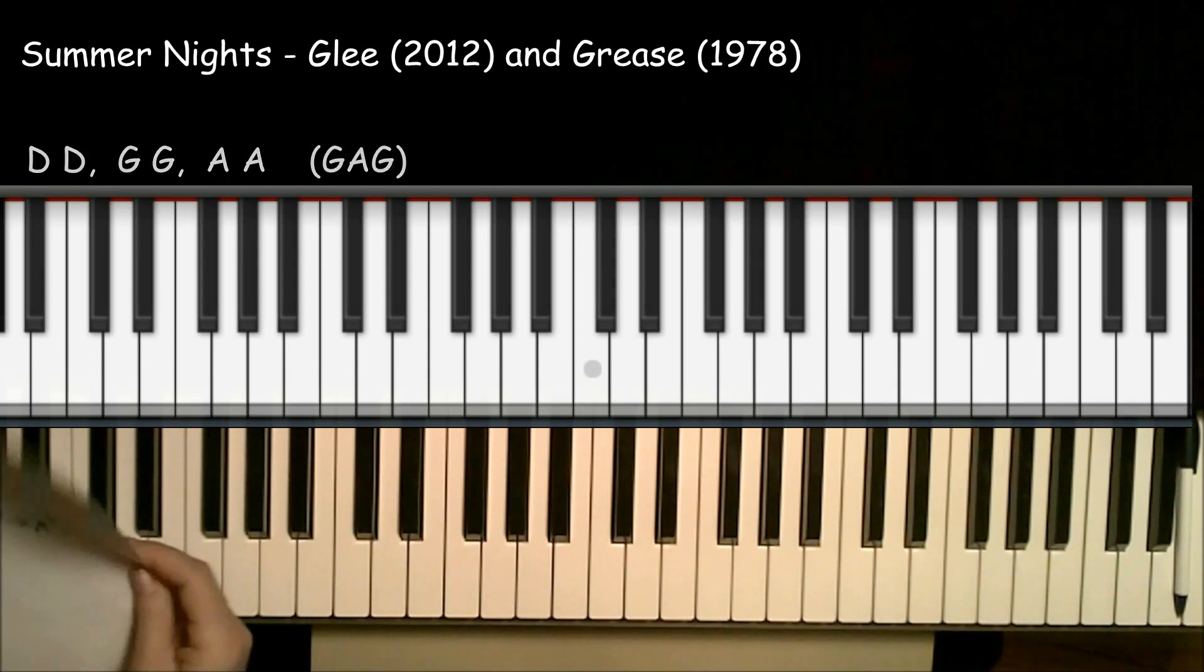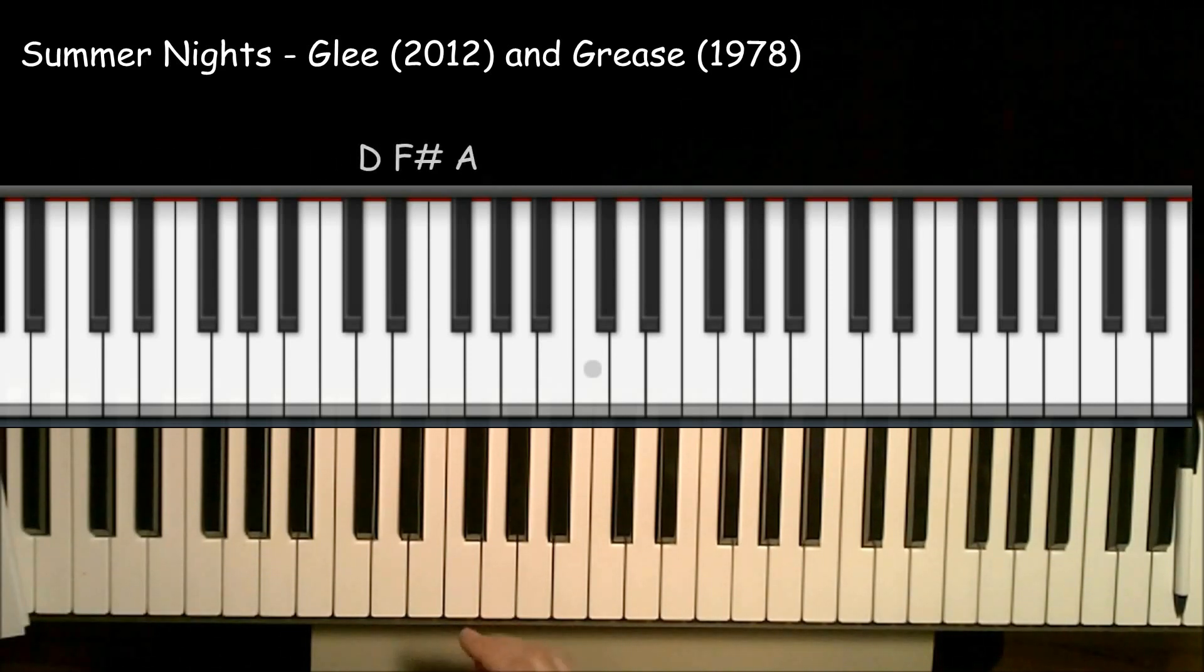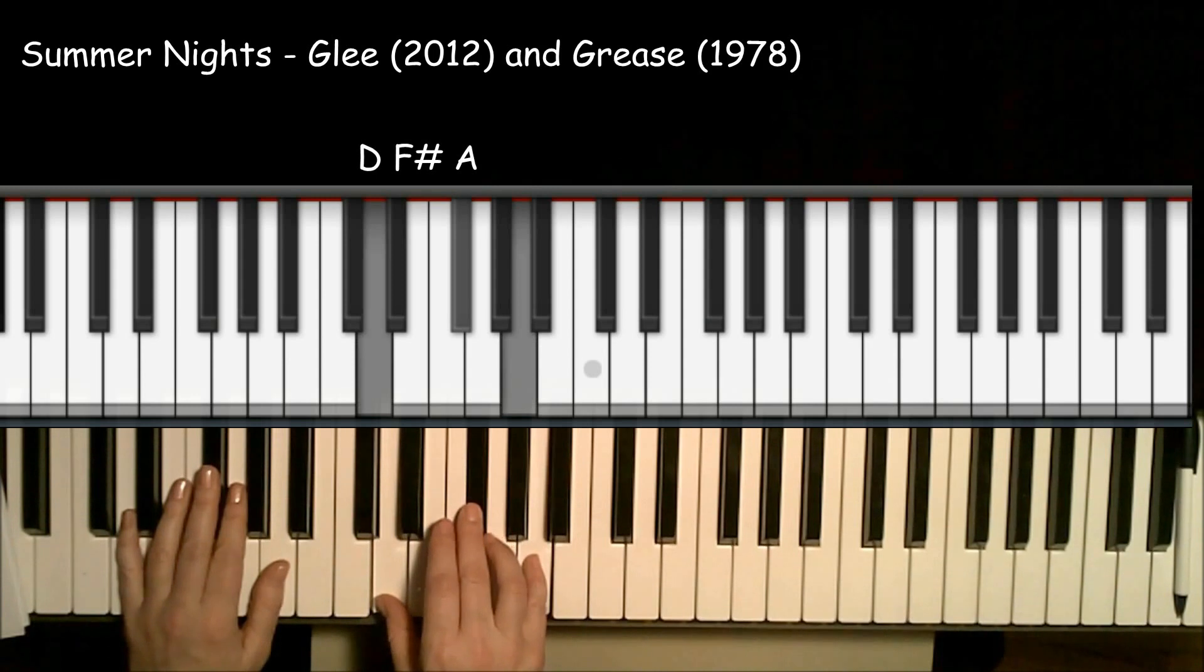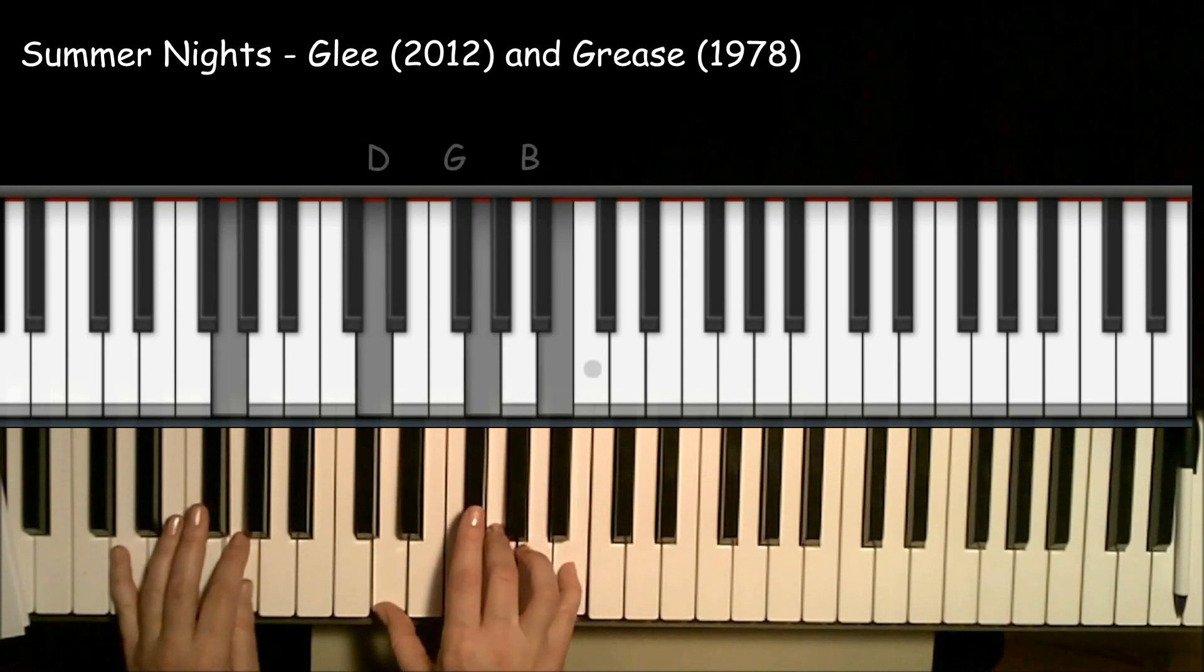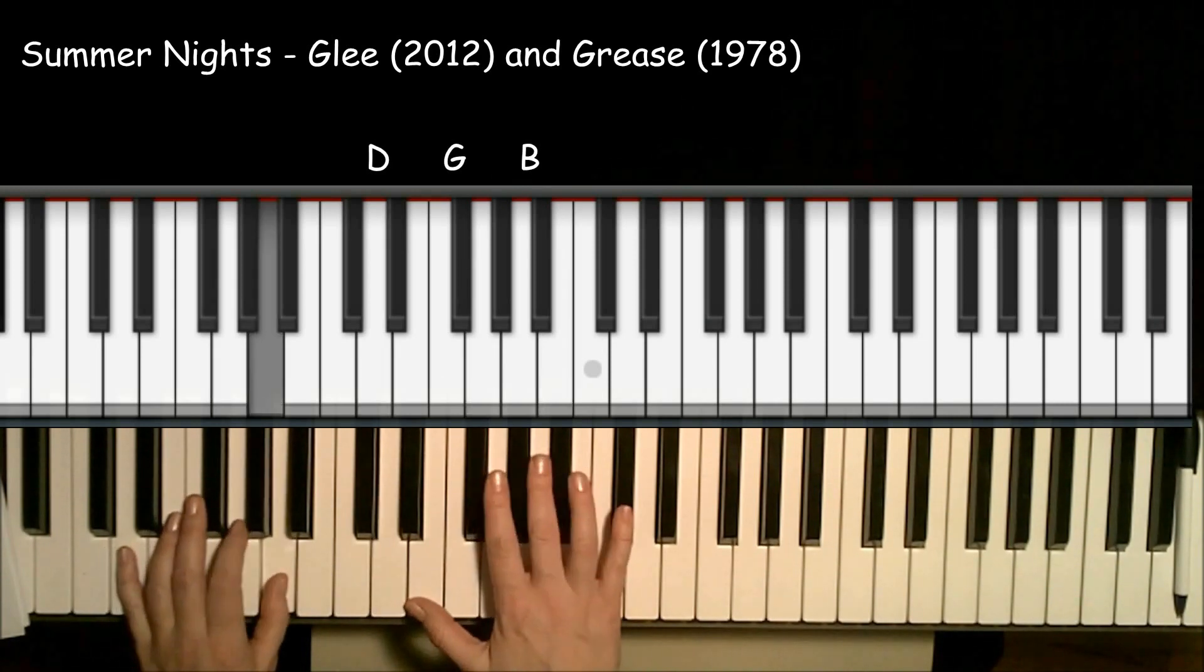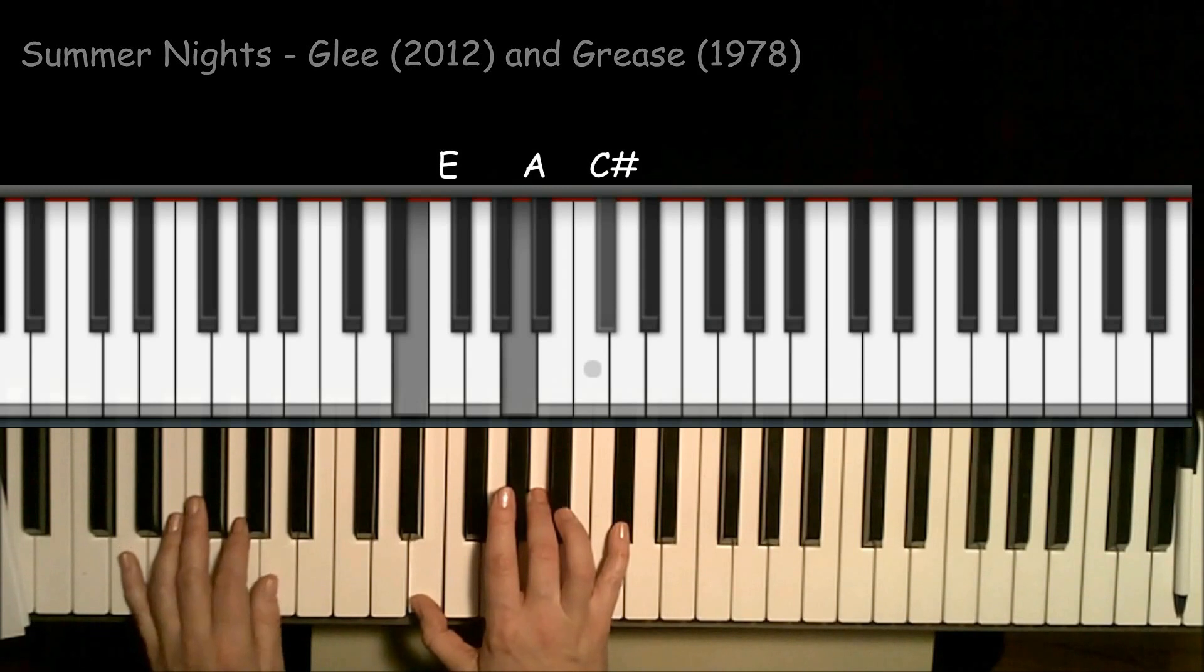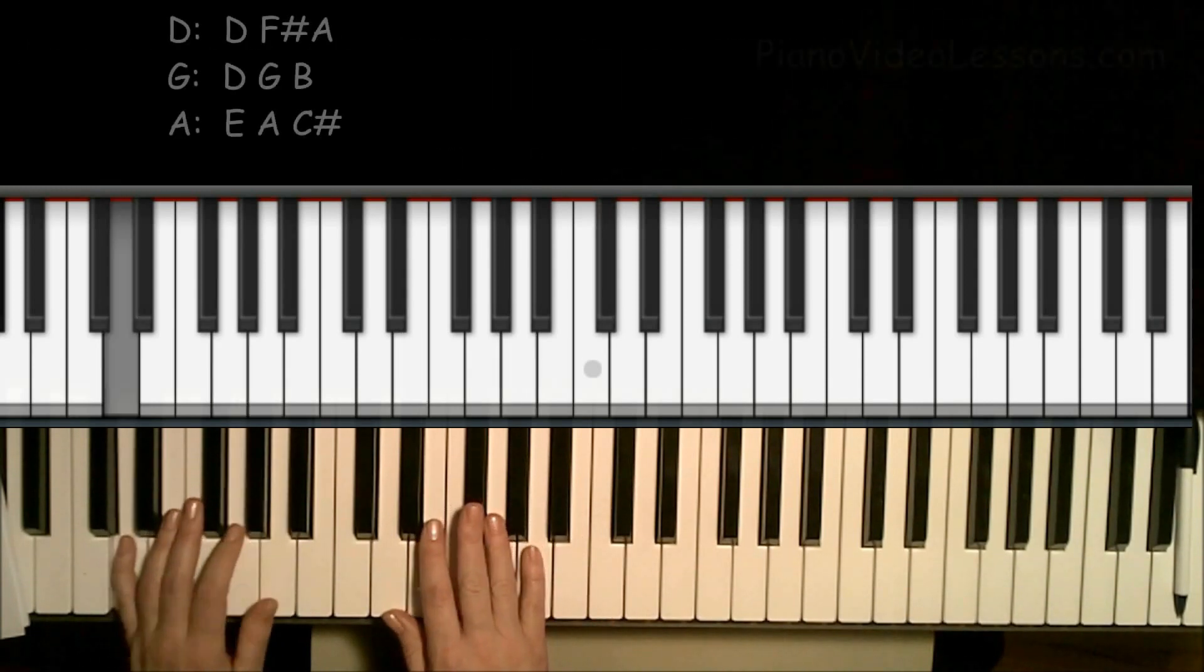So the first part of the piece is just using those chords, and the right hand fills in the chord notes. So for the D chord, you're going to play D, F sharp, A, and then for the G chord, you'll play D, G, A, D, G, B, then that A chord, E, C sharp, A, D.